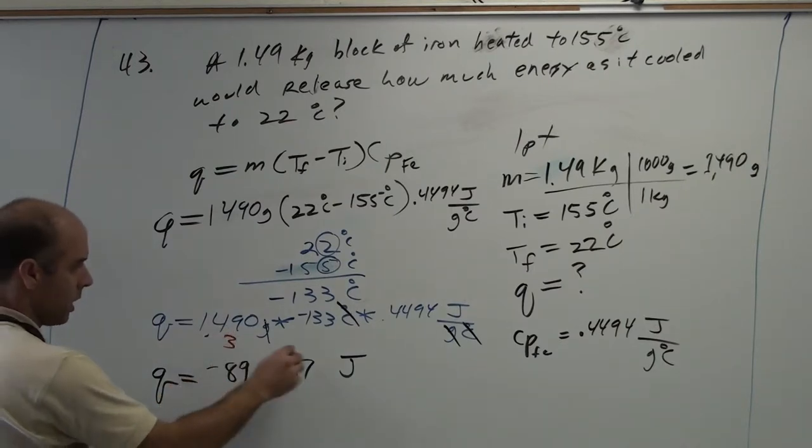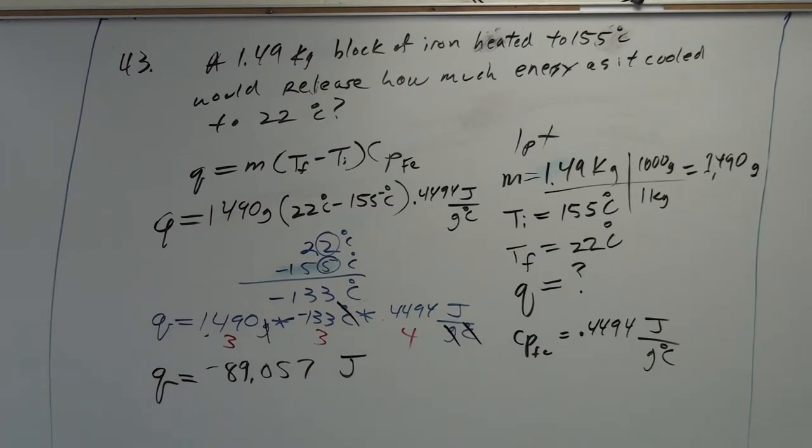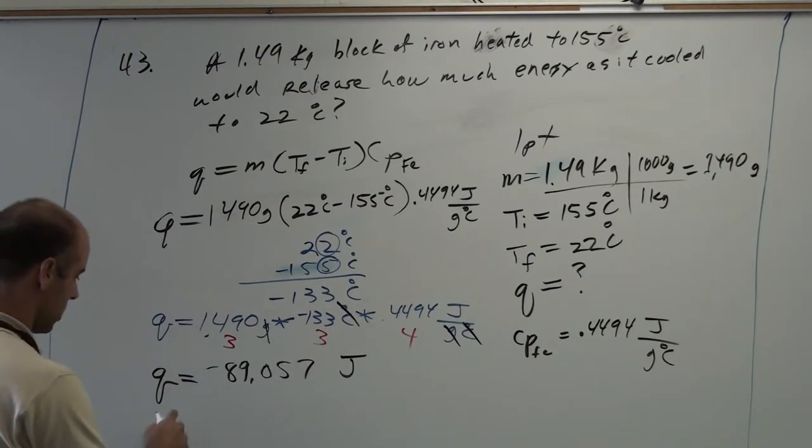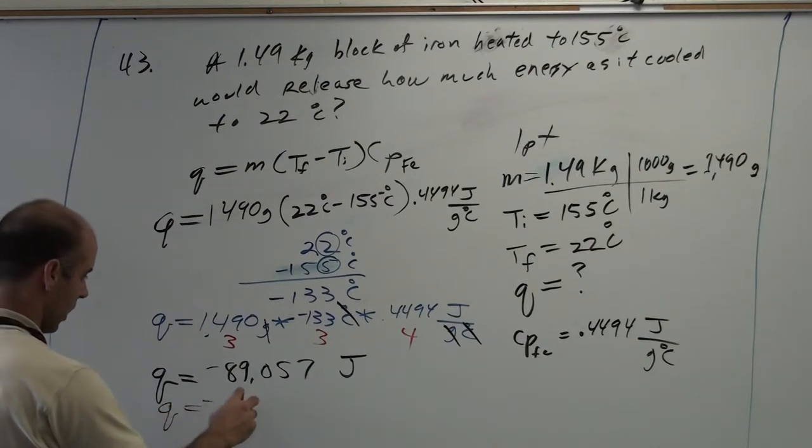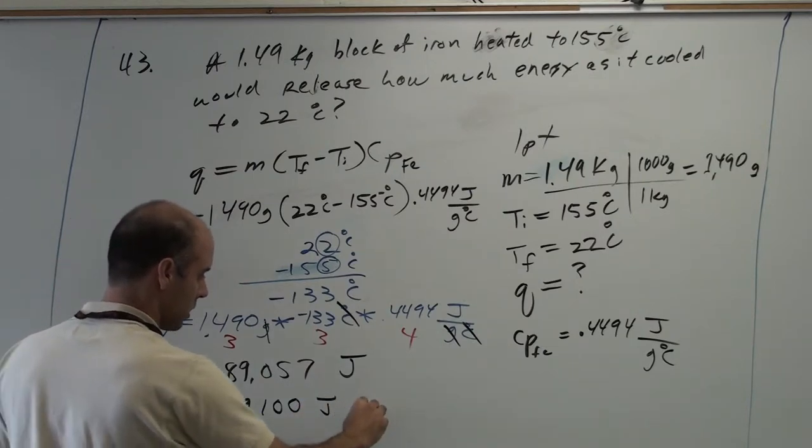Three, three, four. So, we'll round it to three sig figs. It becomes negative 89,100 joules released.